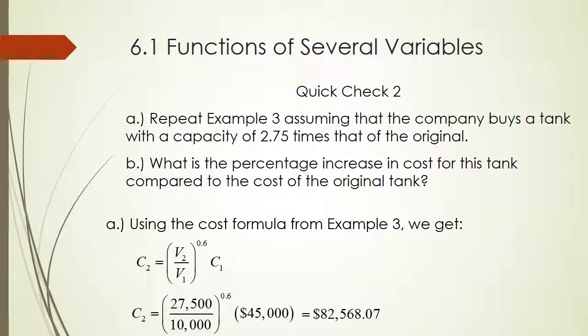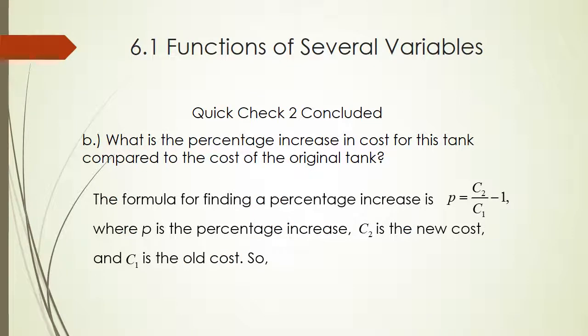So the new cost would be $82,568.07. And the percentage is the second cost over the first minus one. Or another way of doing it is the difference in the cost over the original cost. Either way you go, though, it's 83.5%.